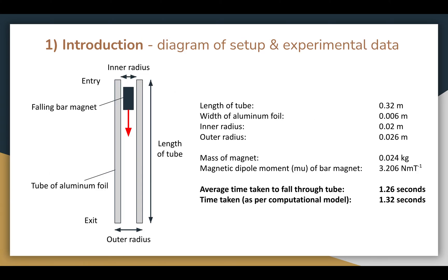This is my experimental setup. As you can see, I dropped a bar magnet through a tube of aluminum foil. I've labeled the dimensions on my diagram and have provided measured values to the right. The magnetic moment, mu, of the bar magnet was found in lab 3, whose link is in the description to this video. After 5 trials, I found the average time taken for the magnet to fall through the tube to be 1.26 seconds, which is fairly close to the 1.32 seconds predicted by my computational model.